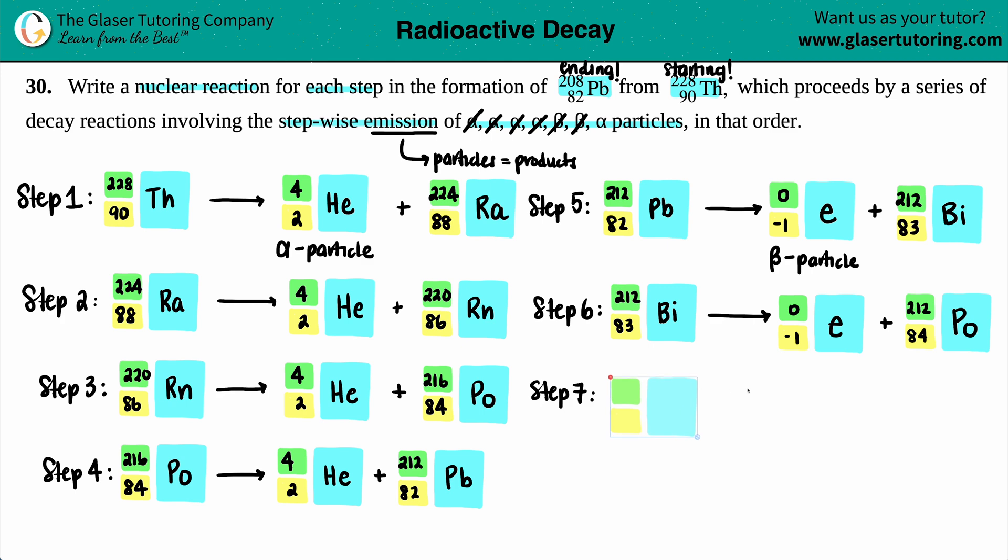Step 7, let's see, fingers crossed. Let's just bring this down a little bit. We got a polonium, Po-84, 212. We are now undergoing our last alpha, so we're back to helium, 4 on the top, 2 on the bottom. Let's see who do we make.